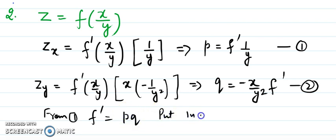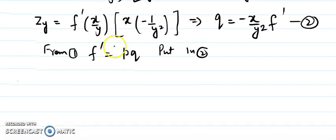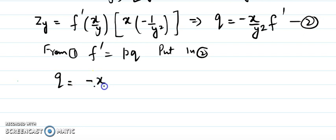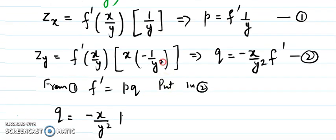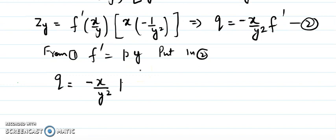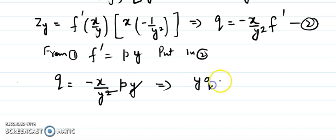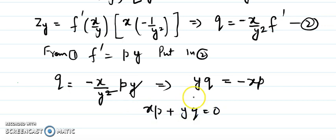Substituting f' = p·y into equation two: q = (-x/y²)·(p·y). One factor of y cancels, leaving q = -xp/y. Transferring y to the other side gives yq = -xp, so the partial differential equation is xp + yq = 0. This is a first-order partial differential equation.